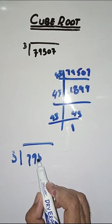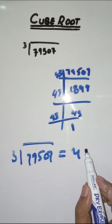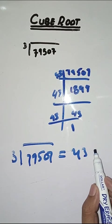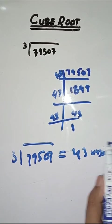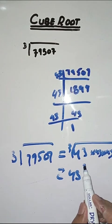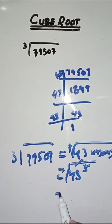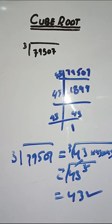So the cube root of 79507 is equal to 43 × 43 × 43, which equals 43. If you students have any doubt, you can ask in the comment section. Thank you.